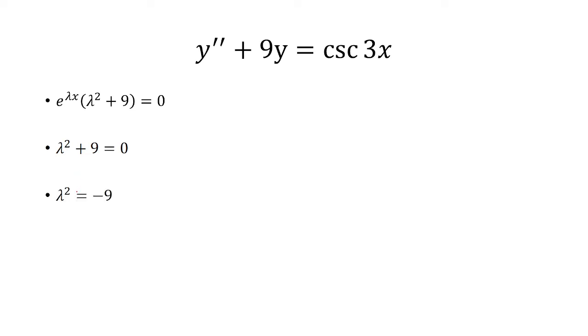Subtracting 9 on both sides, we get λ² as negative 9. And then the square root gives us plus or minus 3i.